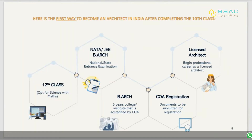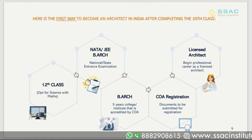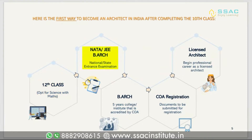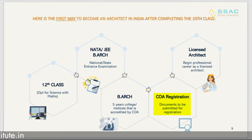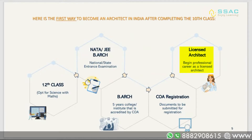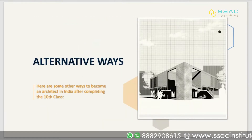The first way to become an architect in India is after completing 10th class — the most common path. After 10th, you opt for Science and complete your 12th class, then give the NATA or JEE entrance examination. After that, you do a five-year B.Arch degree. Upon completing your B.Arch, you do COA registration — Council of Architecture — submitting the required documents, after which you can begin a professional career as a licensed architect.